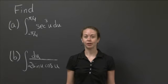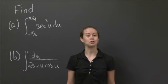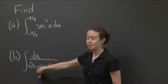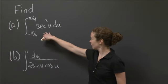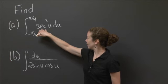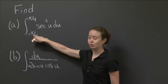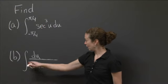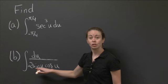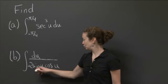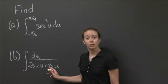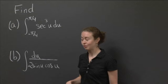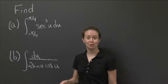Welcome back to recitation. In this video, I want us to practice doing integration with two problems. One is a definite integral, one is indefinite. We're going to find the value of the integral from minus pi over 4 to pi over 4 of secant cubed u du. And then we want to find an antiderivative for 1 over 2 sine u cosine u. So take a while to work on this, pause the video, and when you're ready, restart and I'll show you how I did it.